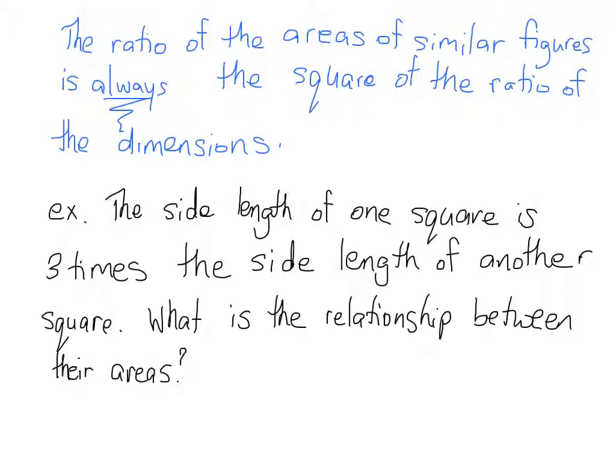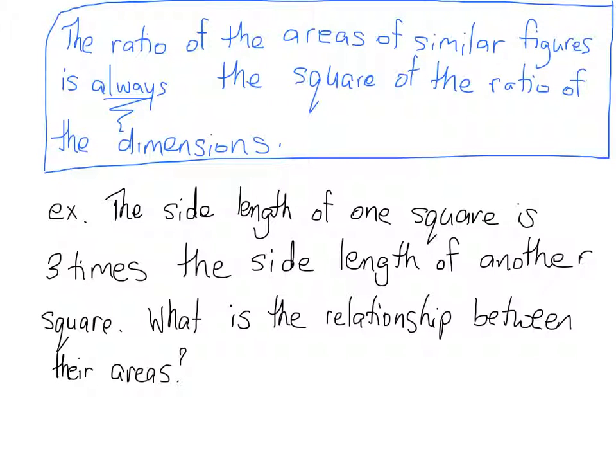Yes, we could go about drawing the squares, writing down the side lengths, figuring out the area of one, figuring out the area of the other, but we don't have to. All we have to do is remember that the ratio of the areas of similar figures is always the square of the ratio of the dimensions.